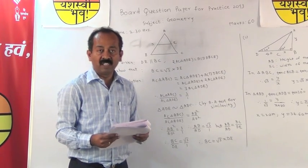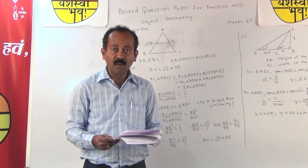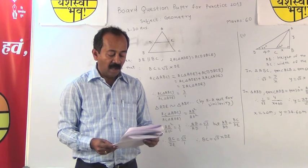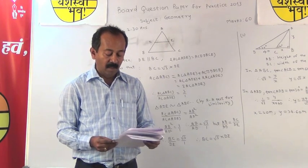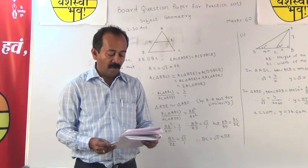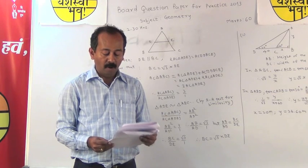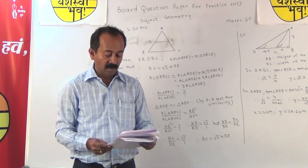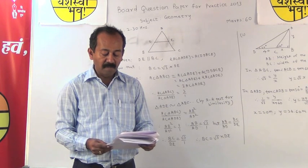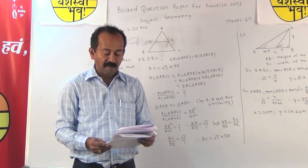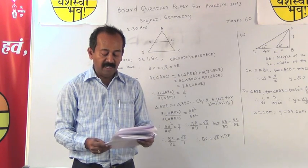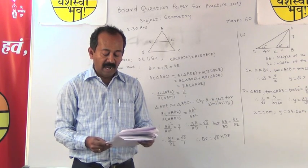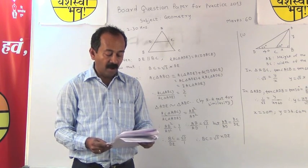The next example is based on trigonometry. A person standing on the bank of a river observes that the angle of elevation of the top of a tree on the opposite bank is 60 degrees. When he moves 40 meters away from the bank, he finds the angle of elevation to be 30 degrees. Find the height of the tree and the width of the river.